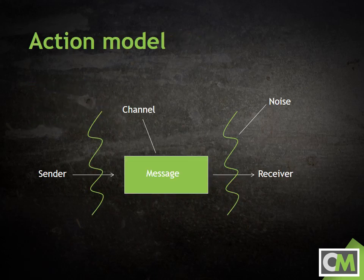So those five elements — sender, message, channel, receiver, and noise — make up the action model of communication. As scholars continued to study communication in greater depth and detail, however, they discovered that the action model didn't paint the full picture of what happens during the communication process. As a result, they developed a new model: the interaction model.